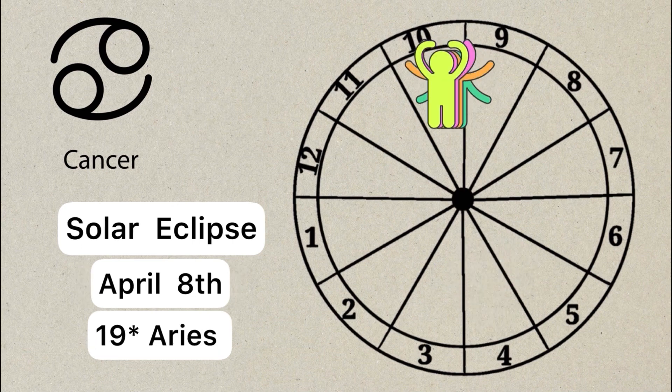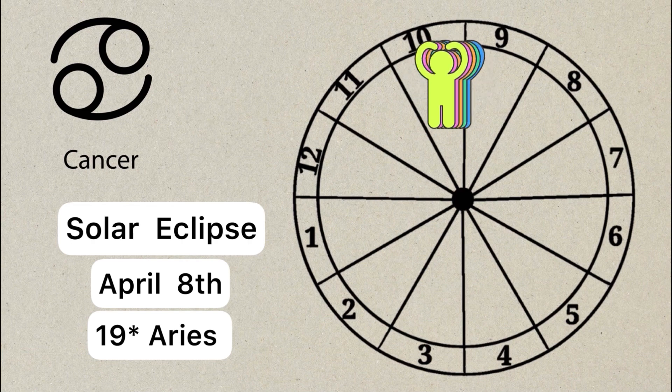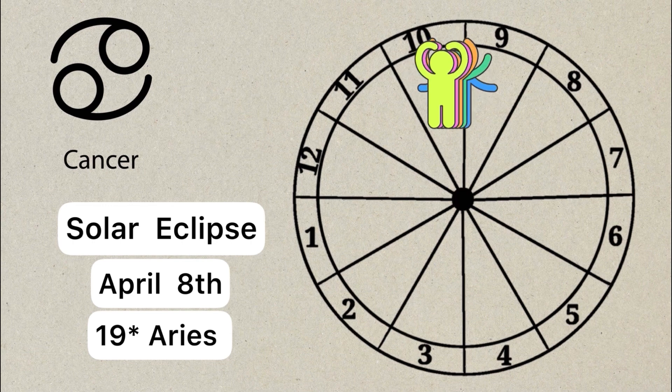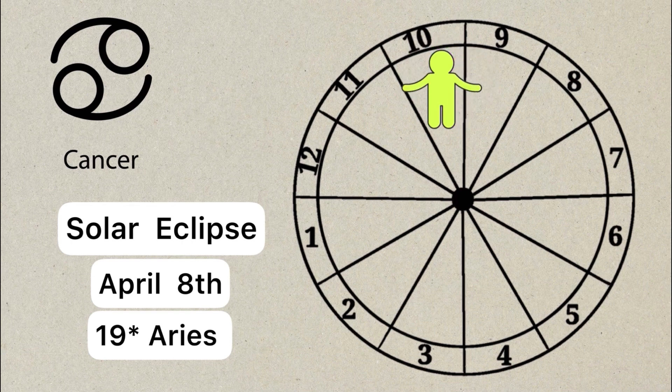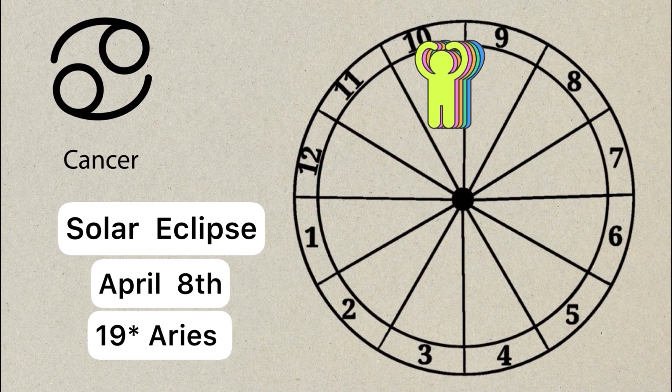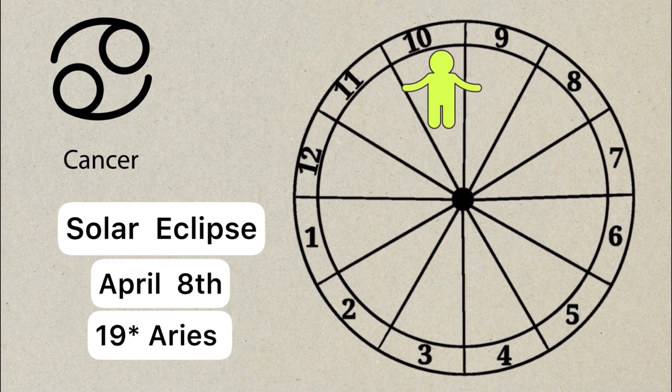The next eclipse is a solar eclipse on April 8th at 19 degrees of Aries. If you have any planets or points from 15 to maybe 24, 25 degrees of Aries, Libra, Cancer, Capricorn, this will affect you more. Or those of you who have an Ascendant from 17, 18, 19, 20 degrees of Cancer, this will definitely affect you. This is in your 10th house of career and popularity.